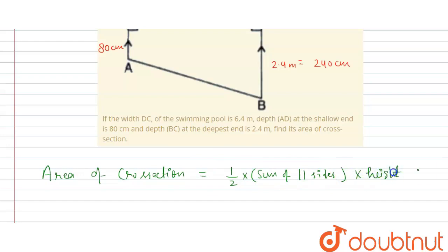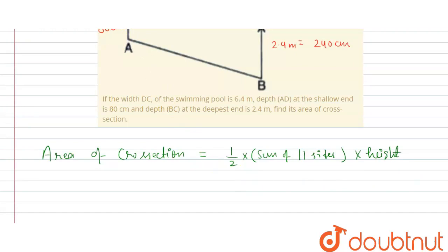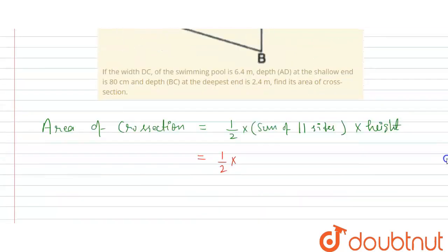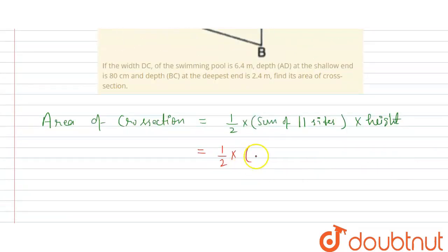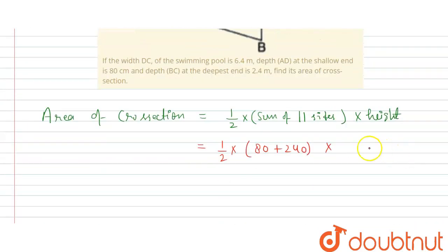Put the information over here, so we get the answer. This is equals to one-half. What is the sum of parallel sides? The parallel sides are 80 and 240, so 80 plus 240 multiply by height. So what is the height of trapezium? It is 640.